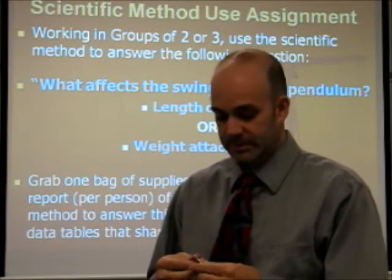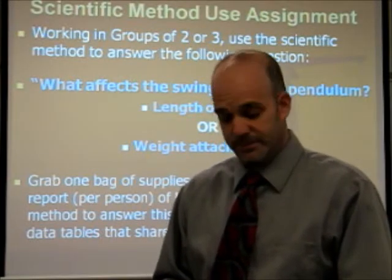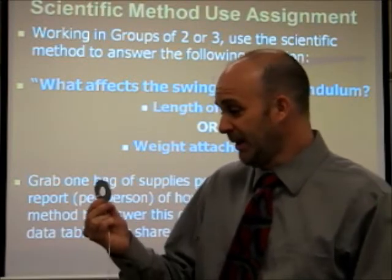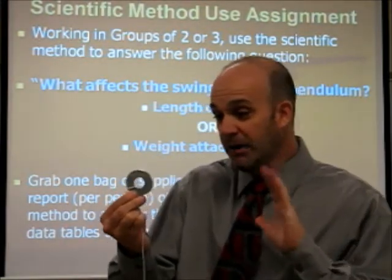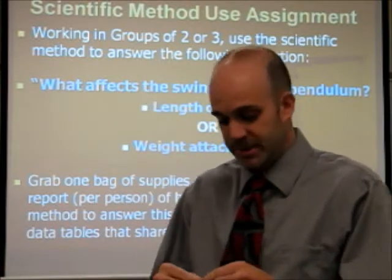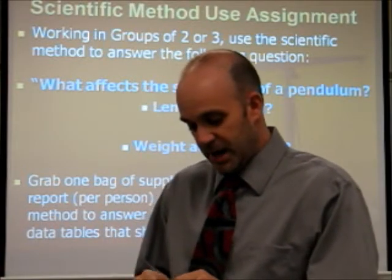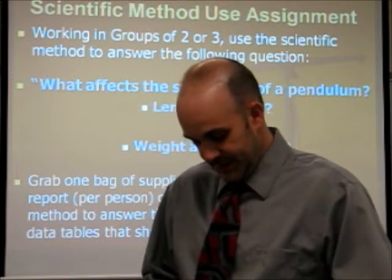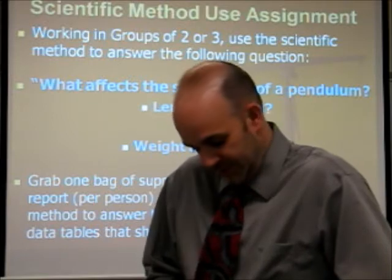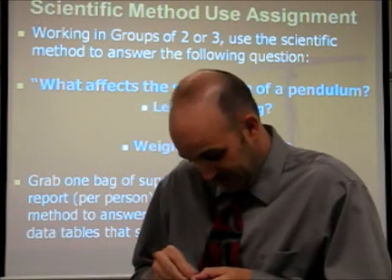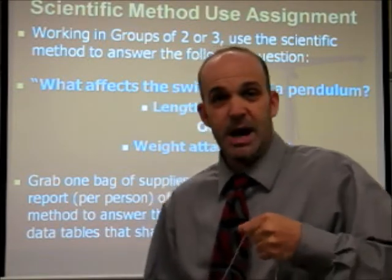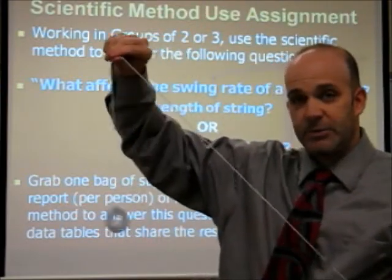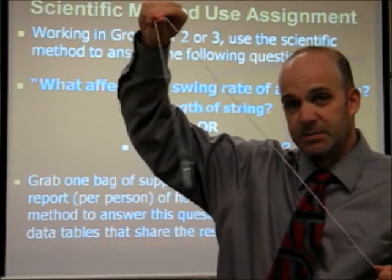Now this weight is called a bob. So this weight is called a bob. All that a pendulum is, is a bob swinging on a string. We're going to take bob and just swing bob back and forth — and that's a pendulum.